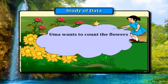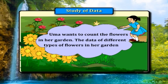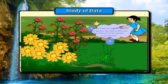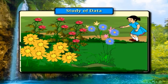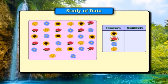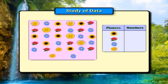Uma wants to count the flowers in her garden. The data of different types of flowers in her garden is given below. Let us help Uma count the flowers. We have sunflowers, roses, violets, and daisies. Counting the daisies: 1, 2, 3, 4, 5, 6, 7. There are 7 daisies.